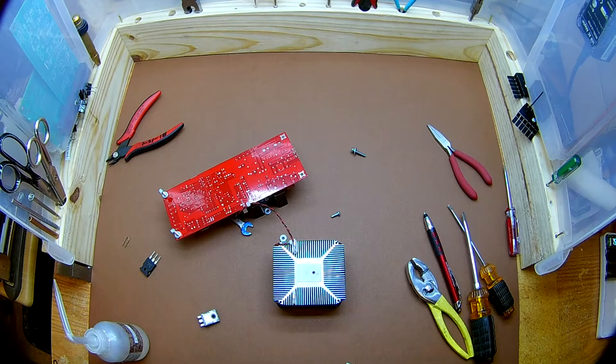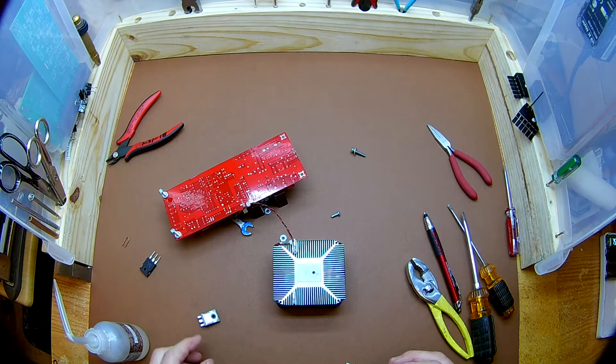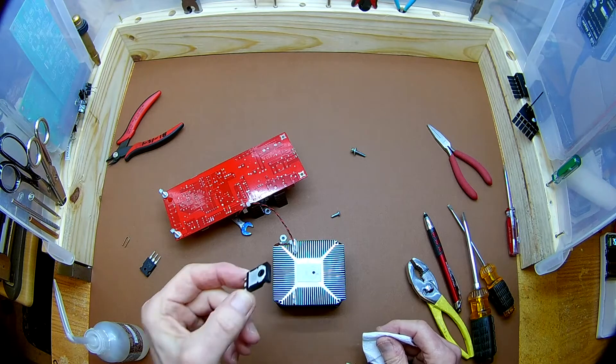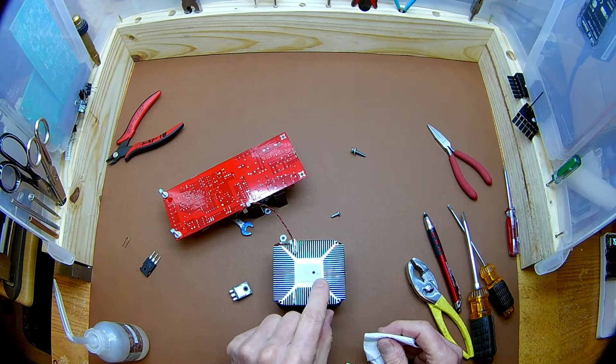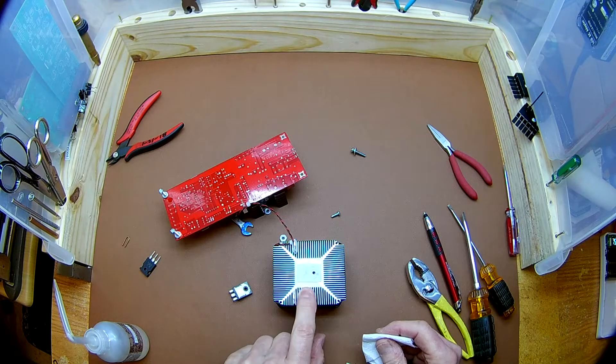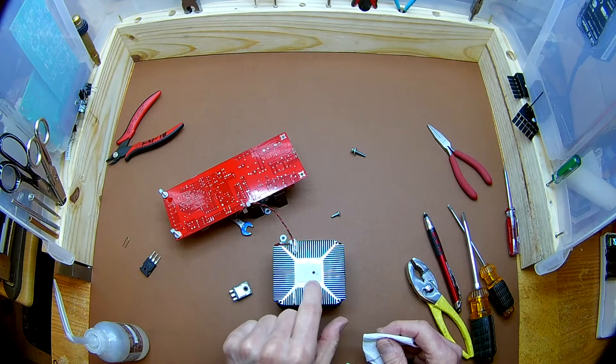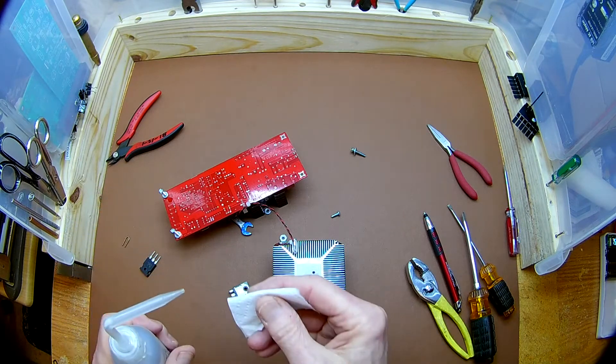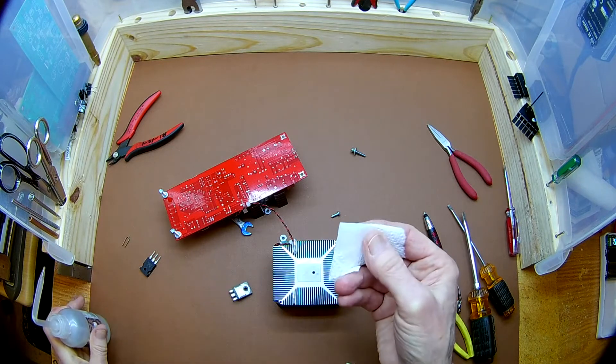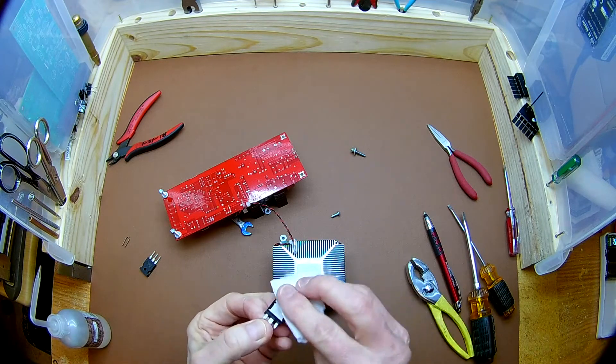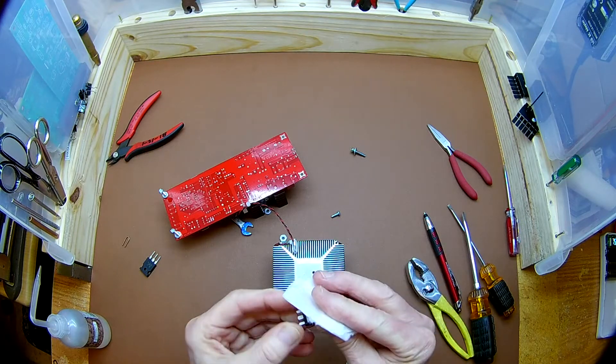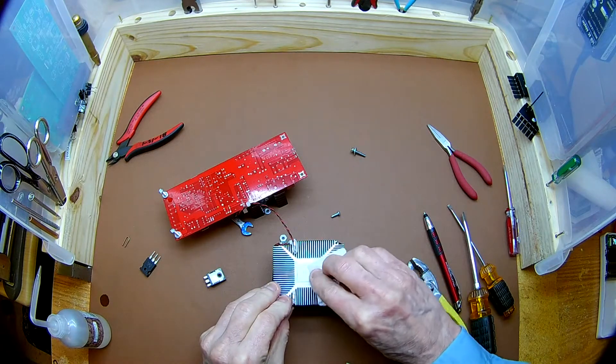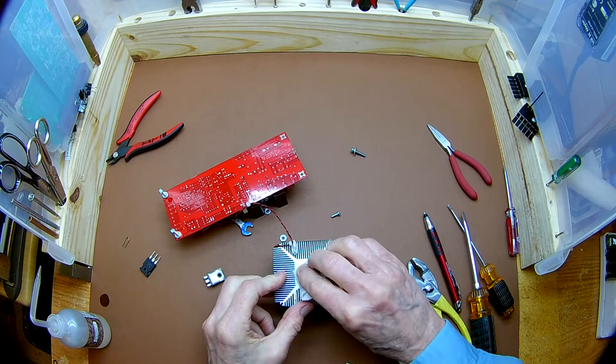Before we install the transistor, a word about cleanliness. It's very important that the transistor surface and the heat sink and the thermal pad be cleaned before the transistor is installed. If you're replacing the thermal pad, then you've got to make sure that the surface of the heat sink is clean and smooth. I will use a little bit of pure isopropyl alcohol on a lint-free cloth. Clean the back of the transistor. Set it down so it can dry. In this case, I'm simply going to clean the surface of the thermal pad to make sure that it is clean.